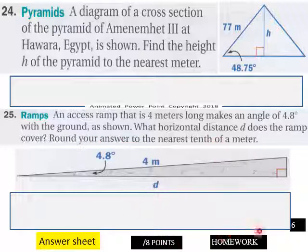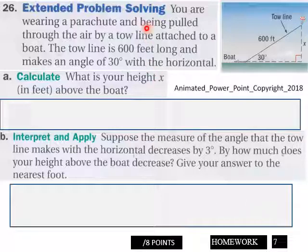Page seven, you got a parachute question here. What is the height, what is your height x in feet above the boat? And then interpret and apply, I'm gonna let you do that. Give your answer to the nearest foot and put that down here. You got eight points here, page seven.